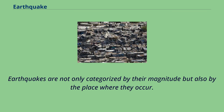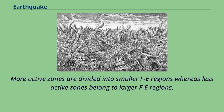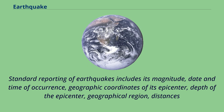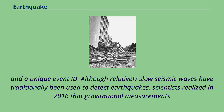Earthquakes are not only categorized by their magnitude but also by the place where they occur. The world is divided into 754 Flinn-Engdahl regions, which are based on political and geographical boundaries as well as seismic activity. More active zones are divided into smaller FE regions whereas less active zones belong to larger FE regions. Standard reporting of earthquakes includes its magnitude, date and time of occurrence, geographic coordinates of its epicenter, depth of the epicenter, geographical region, distances to population centers, location uncertainty, several parameters included in USGS earthquake reports, and a unique event ID.